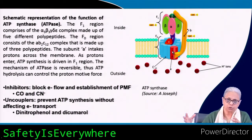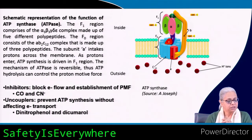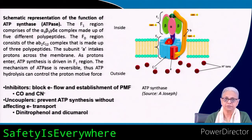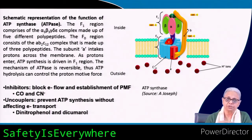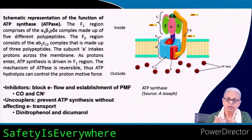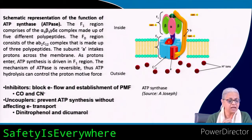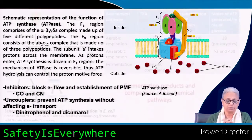Water molecules are lost and ATP is generated from ADP molecules — that is how the entire process works. From an environmental microbiology perspective, there are two important groups of compounds. First, inhibitors — molecules that block the flow of electrons and the establishment of the proton motive force. Carbon monoxide and cyanide are toxic compounds that prevent the electron transport chain from proceeding, preventing PMF from being established and stopping ATP generation.